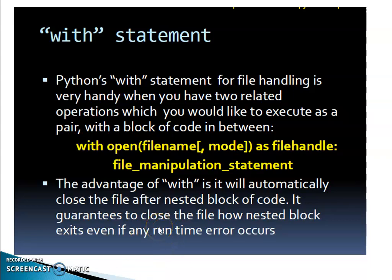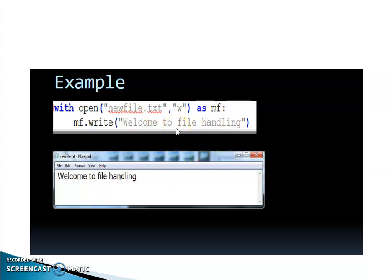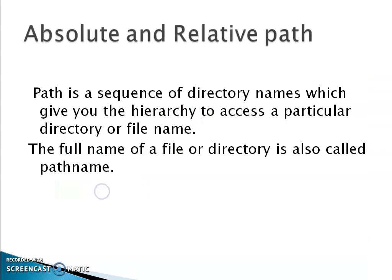Let us look at an example: with open('newfile.txt', 'w') as mf. Here we are opening this file as mf, so mf is a file handle. Then mf.write('welcome to file handling'). Instead of using mf = open('newfile.txt', 'w'), you can write with open('newfile.txt', 'w') as mf. It will write this statement — 'welcome to file handling' — into the file.